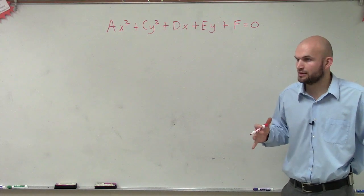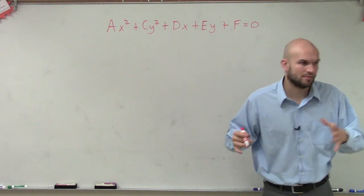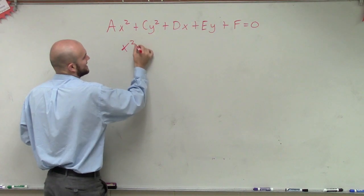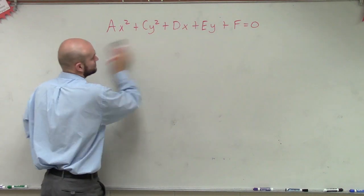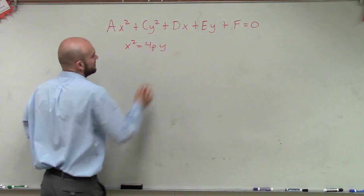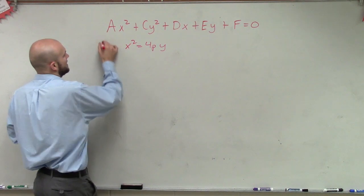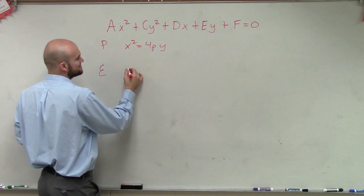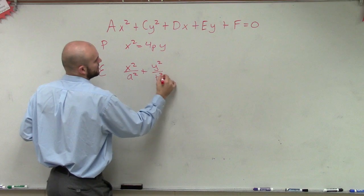But we've also talked about standard forms. I'm just going to go through one of them for each one. The first one we talked about was a parabola, where we can rewrite it as x squared equals 4py — that is a parabola with the vertex at the origin. Then we talked about an ellipse, and remember, an ellipse had x squared over a squared plus y squared over b squared equals 1.